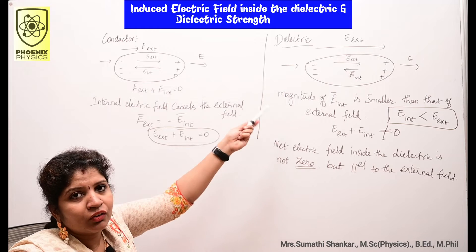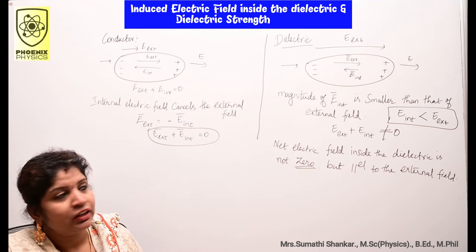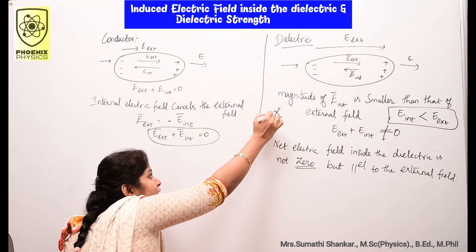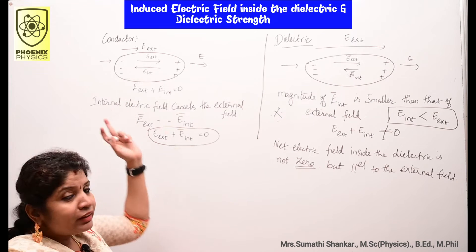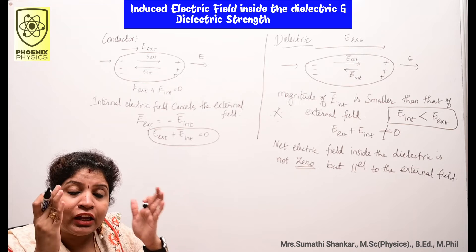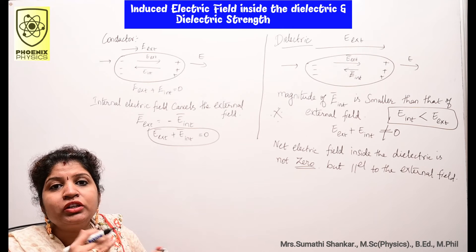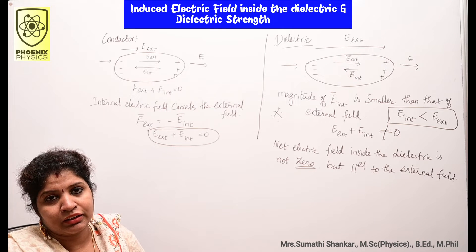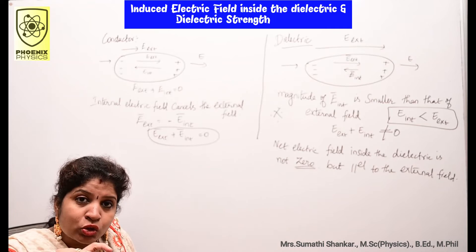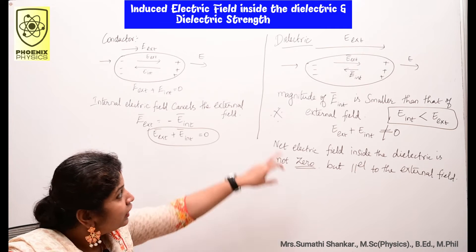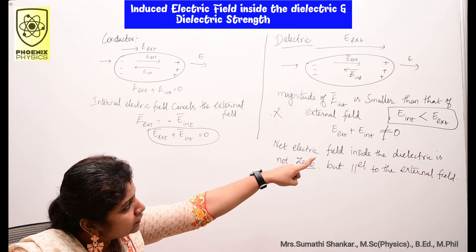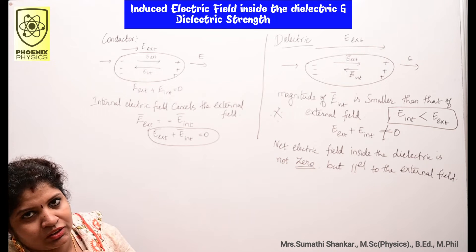but the magnitude of the internal electric field is smaller than that of the external electric field. This condition is very important. In a conductor, E internal equals E external in magnitude. But in a dielectric, E internal is less than E external.